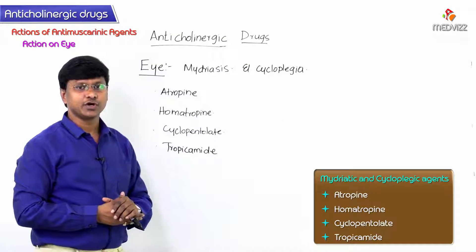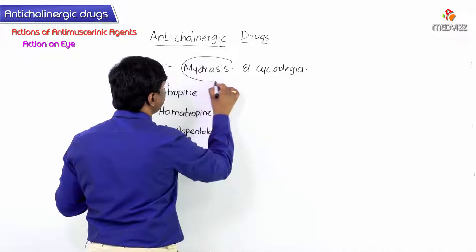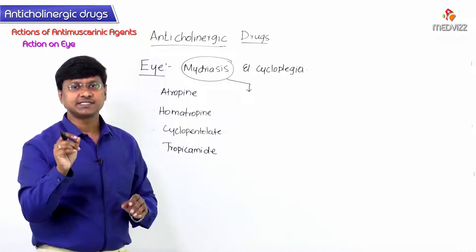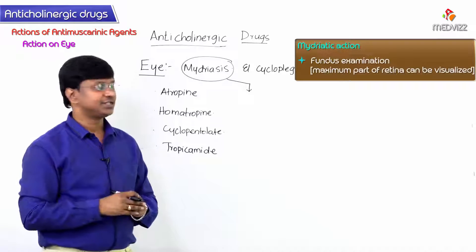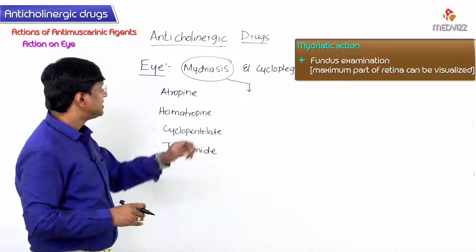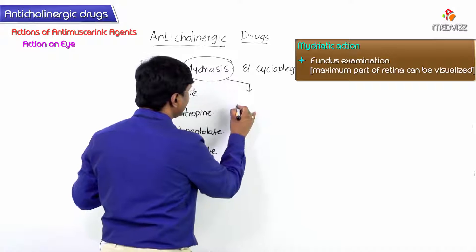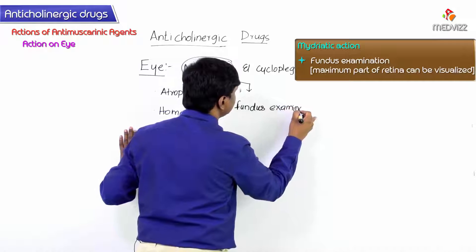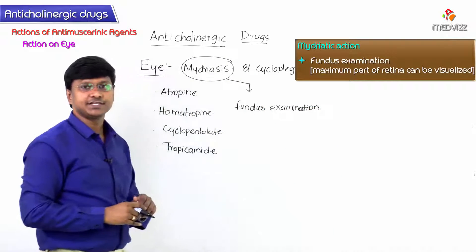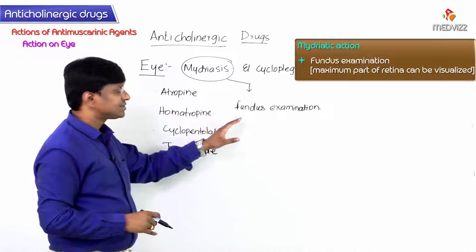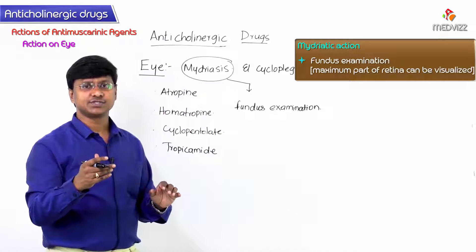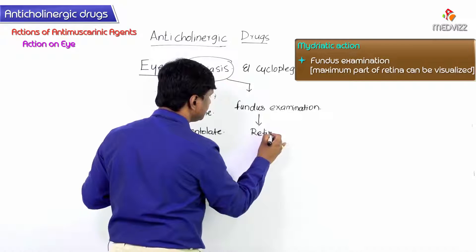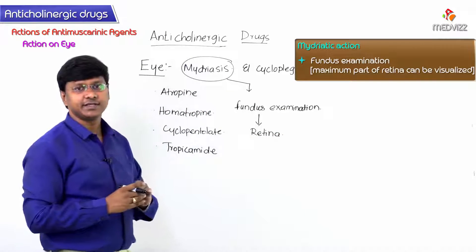The mydriatic action refers to the dilatation of the pupil. Once the pupil is dilated, fundus examination becomes very easy. This mydriatic action is useful in fundus examination because when you observe the fundus through the dilated pupil, the maximum part of the retina can be visualized.